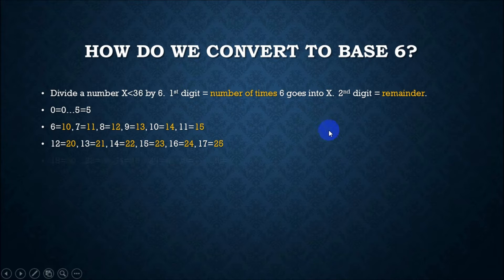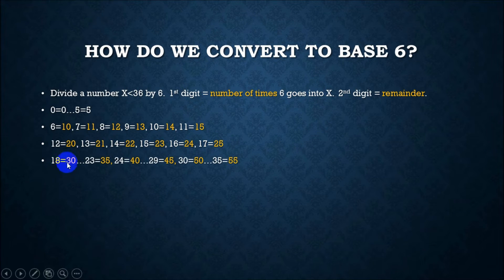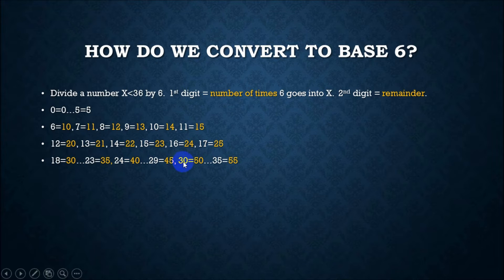So that's the formula. When you get to 18, that's 3,0. When you get to 24, that's 4,0 — that's 4 times 6. When you get to 30, that's 5 times 6 with no remainder, so it looks like 5,0. At 35, that would be 5 sixes with a remainder of 5.